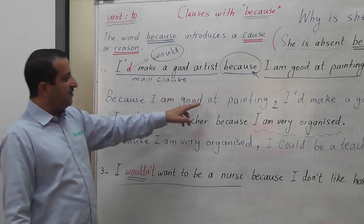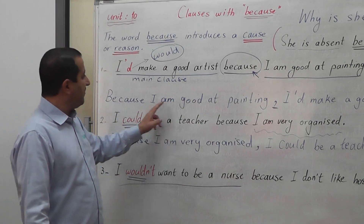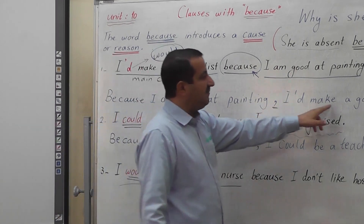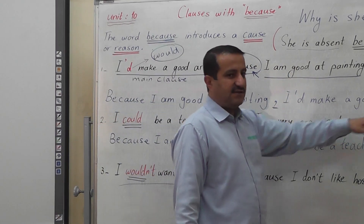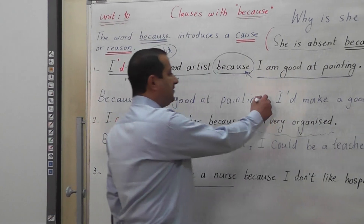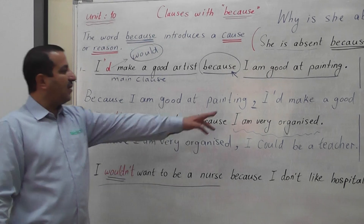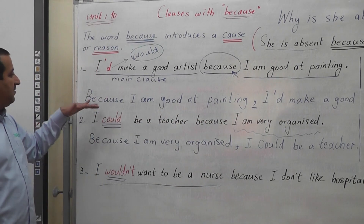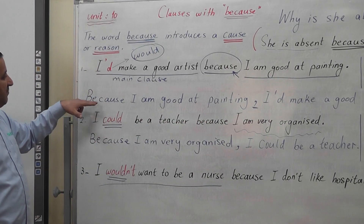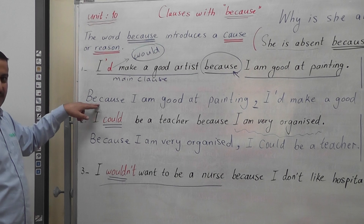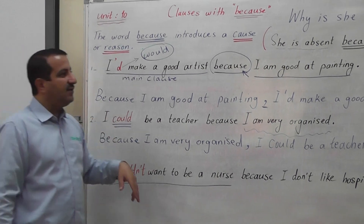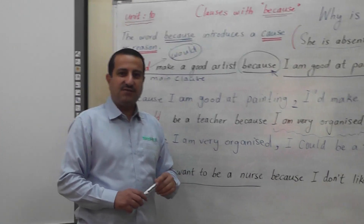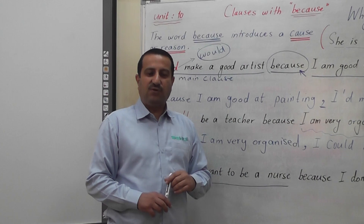For example: 'Because I am good at painting, I'd make a good artist.' The difference is that a comma is used when we start with the clause that begins with BECAUSE. That's all for today — thank you very much and all the best.